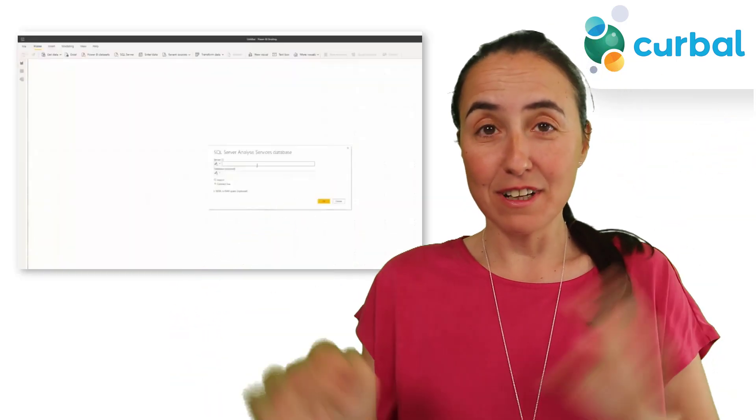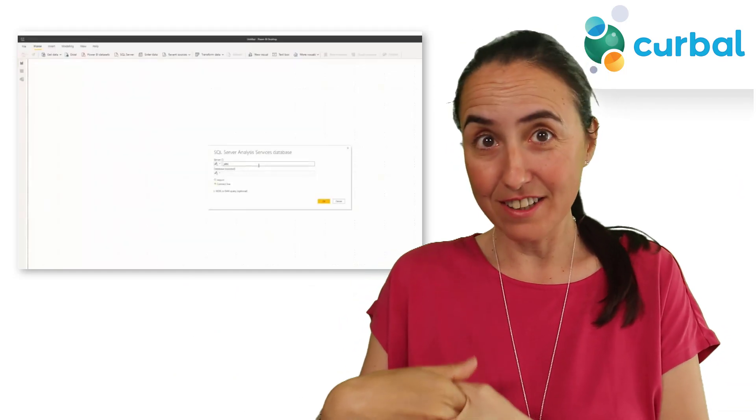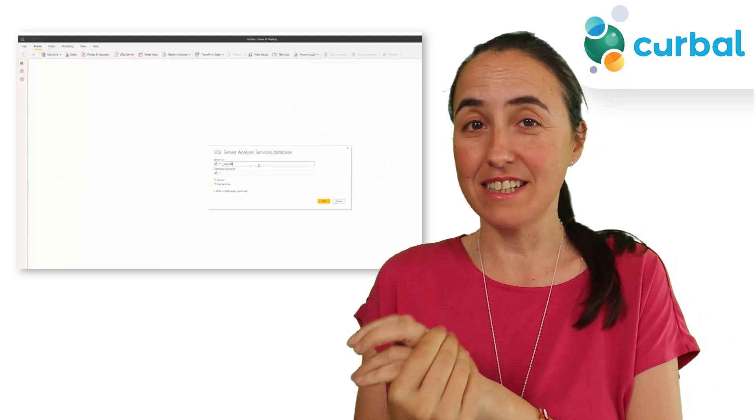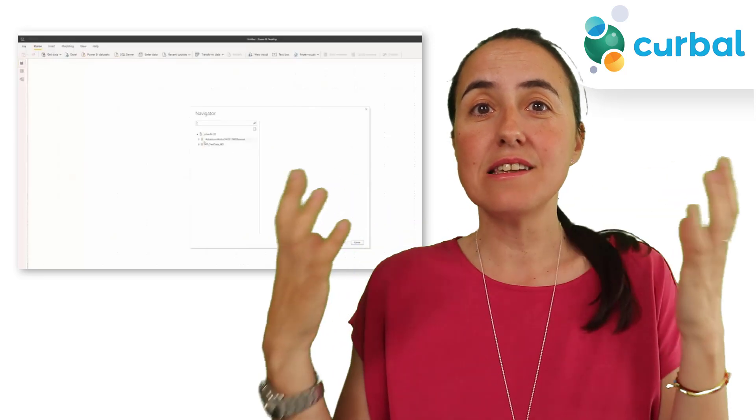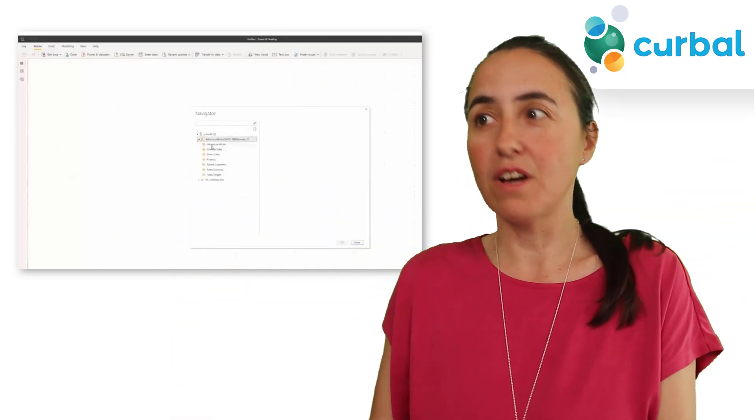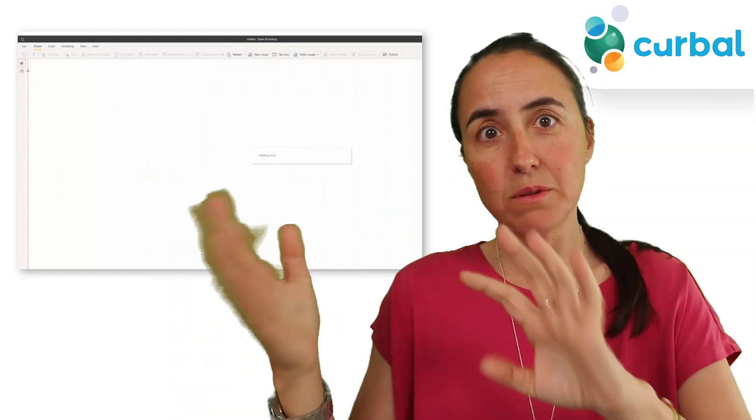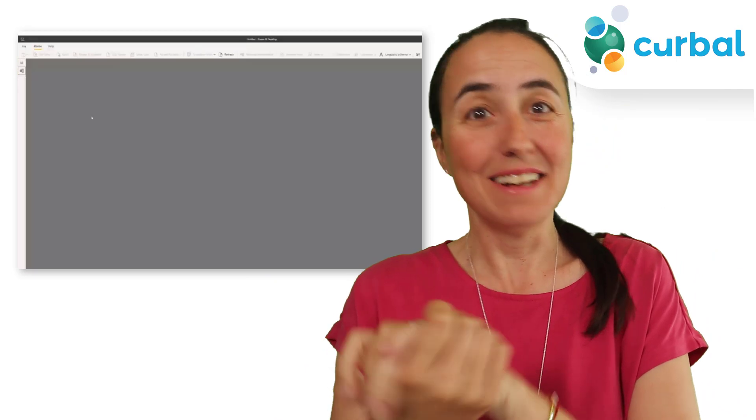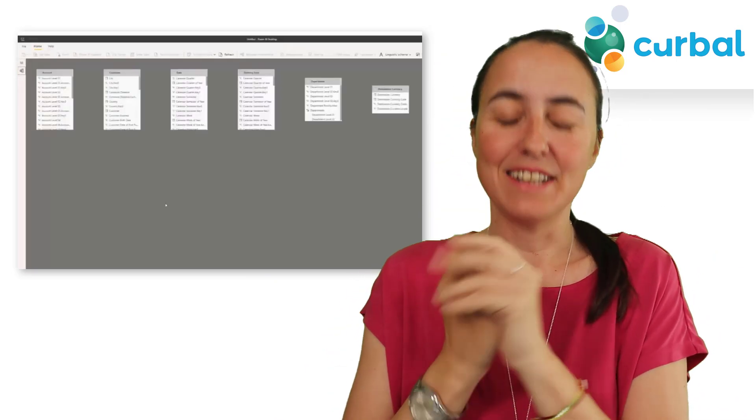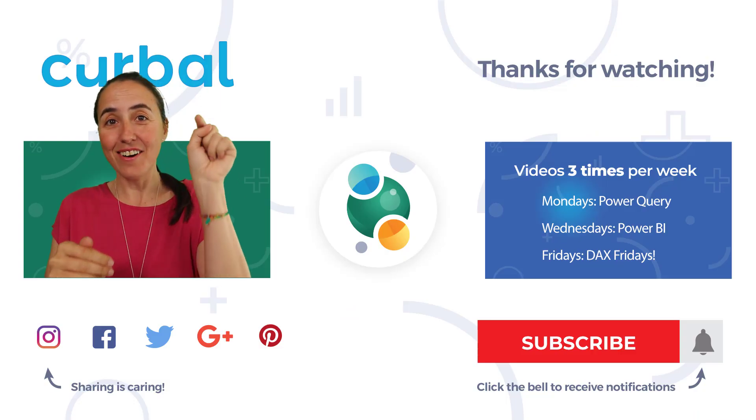And now my favorite of everything that's been released this month is: if you're working with a live connection, for example with SSAS, I'm not working with that now but I did before - you couldn't see the model. So if you wanted to see the model you had to go to SSAS, and as a developer they had to give me access there. Now there is a modeling pane when you have a live connection. That is very, very good. That is for me the best update this month.